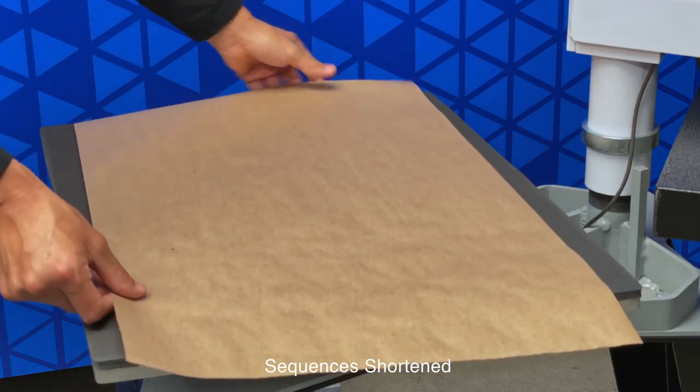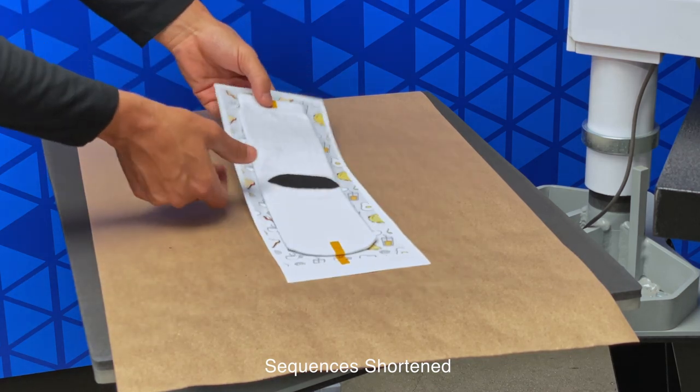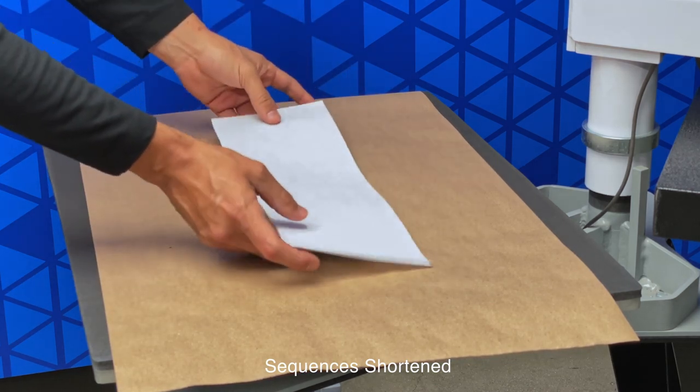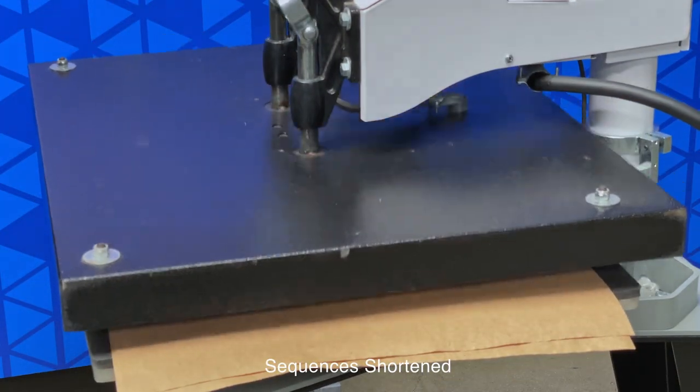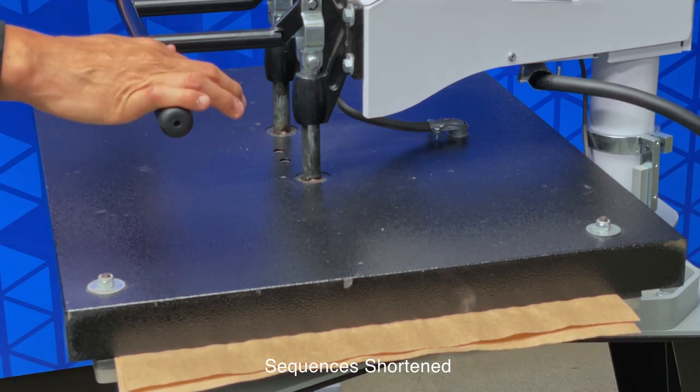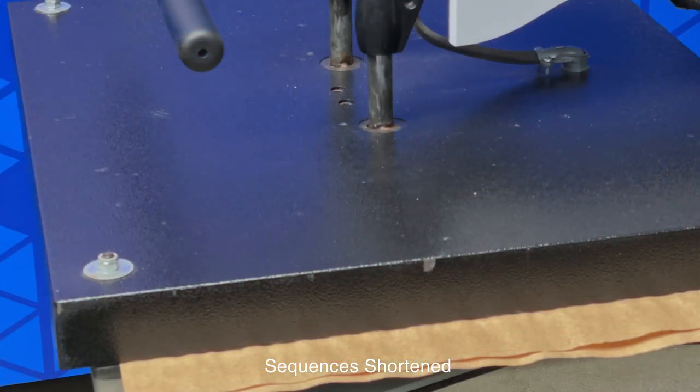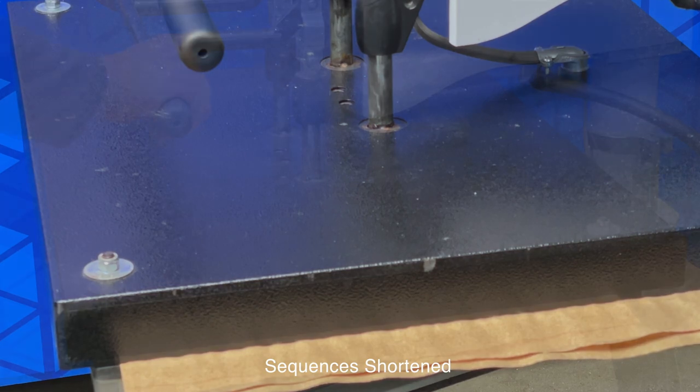Before we place our socks onto the press, let's place a sheet of craft paper first. Take our sock design and we'll flip it so the paper is on top. We'll set another sheet of craft paper, and we're ready to begin pressing our first side of the sock. We're pressing at medium pressure, 400 degrees, for 60 seconds. When the timer's done, it will alert us and then we can prepare the second side of the sock.